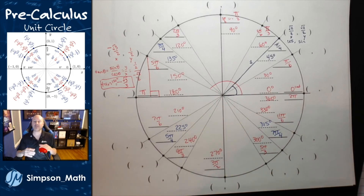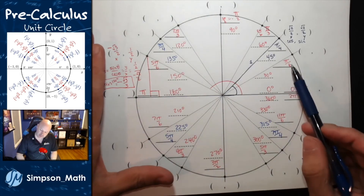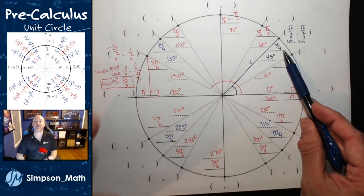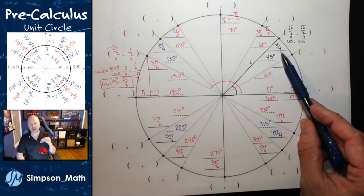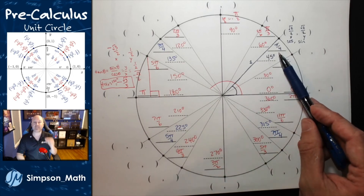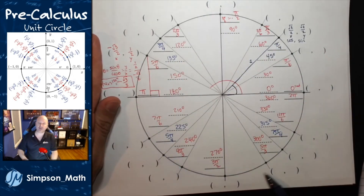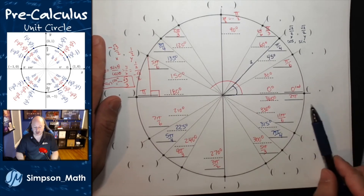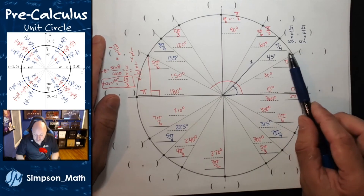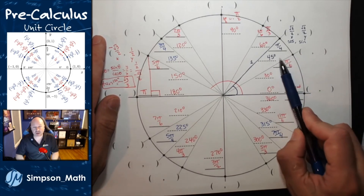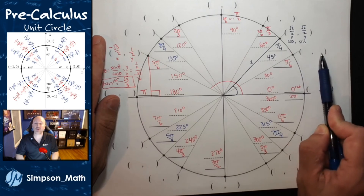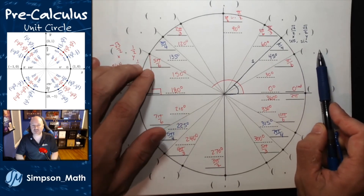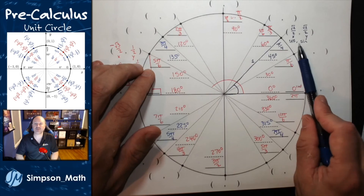Practice labeling a unit circle in degrees and in radians quickly. If you need to convert a few times using pi over 180 or 180 over pi, do so. But then get to the point where you can just quickly count out the radians, then find some of these exact values and start to label these coordinates. Maybe leave off tangent the first few times — get those cosine and sine values first.